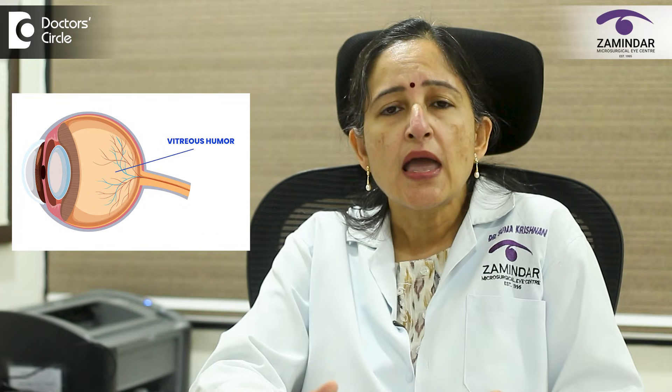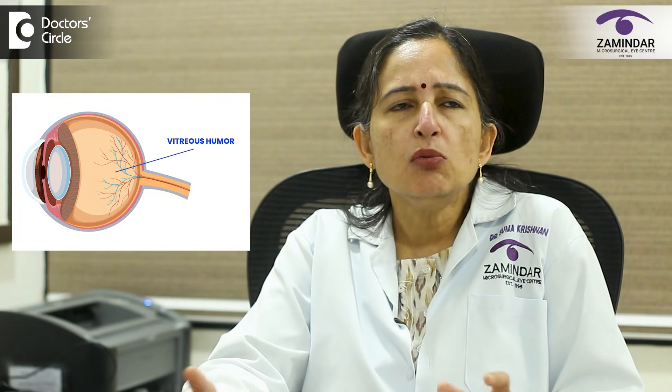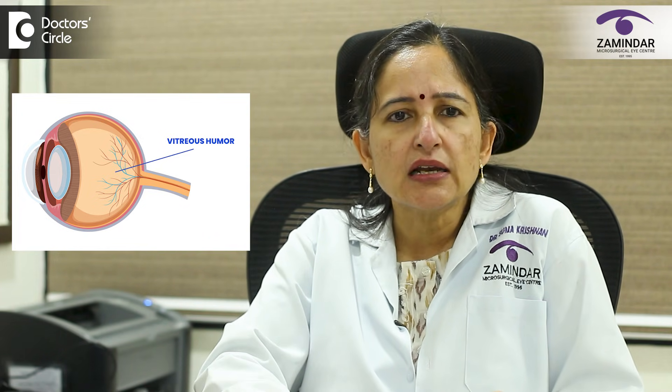Now why do we see floaters in the eye? The inside of our eye is filled with a clear jelly-like substance called the vitreous. As we grow older, this jelly becomes a little watery and can form tiny clumps or strands. Think of it like this: imagine you have a clear jelly with a few specks of dust inside. When you shine a light through it, the dust casts little shadows. In the same way, the clumps in the jelly of the eye cast shadows on the retina — the light-sensitive screen at the back of your eye. And these shadows are what we see as floaters. They may look like dots, strands or little cobwebs, and they usually move as your eye moves.